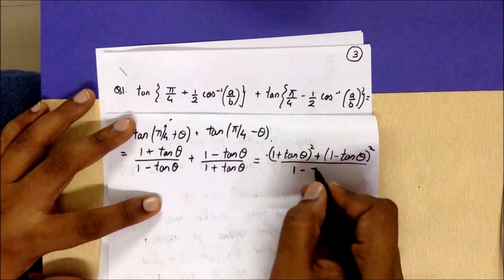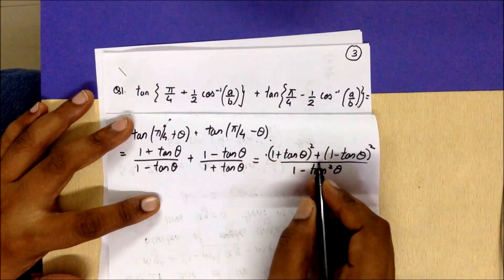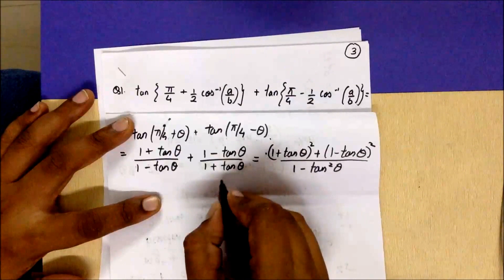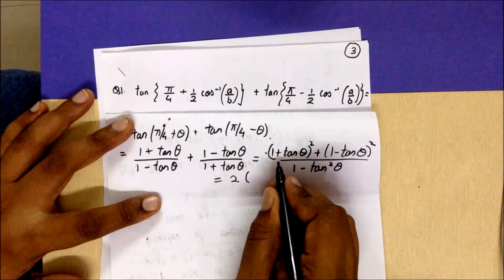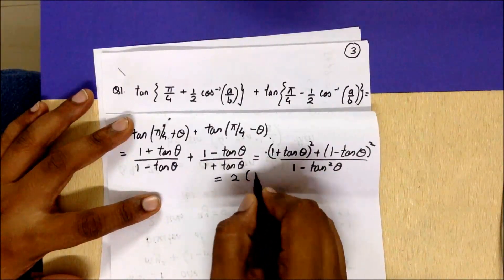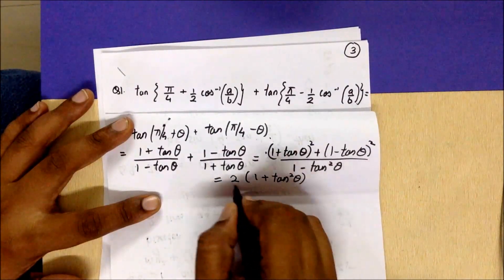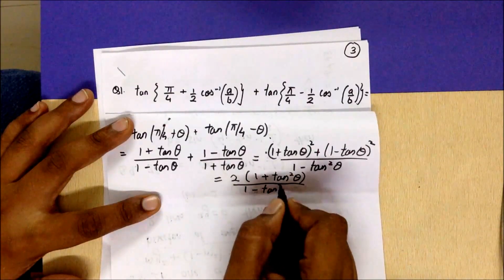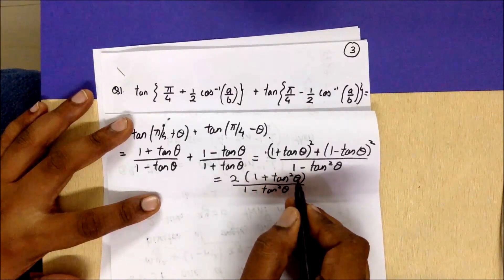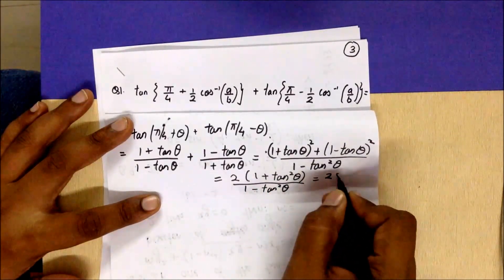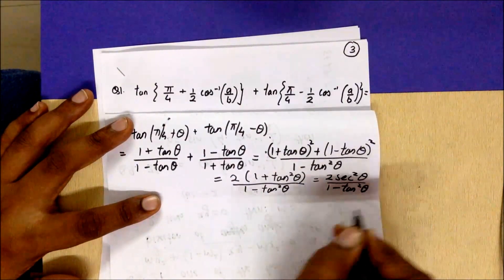The denominator becomes (1 − tan θ)(1 + tan θ), which is 1 − tan²θ. The numerator is (1 + tan θ)² + (1 − tan θ)², which follows the a² + b² form: 2(a² + b²) = 2(1 + tan²θ). Now 1 + tan²θ equals sec²θ, so the numerator becomes 2sec²θ divided by 1 − tan²θ.